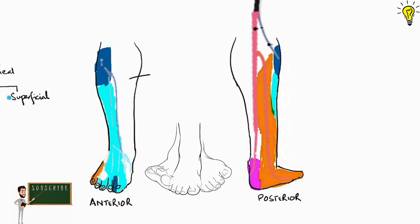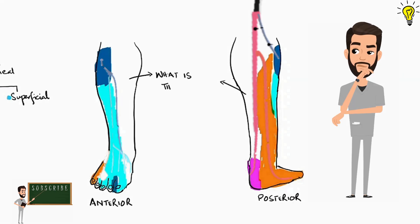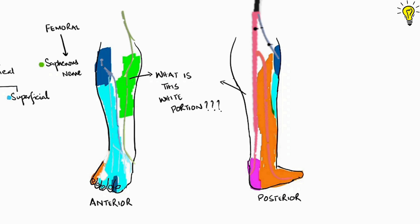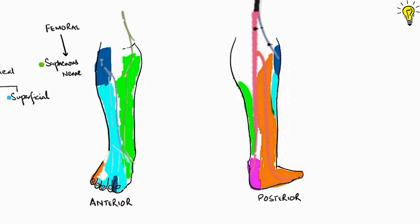What about this wide spared area — anteromedial on the leg, running all the way down to the foot? Yes — the saphenous nerve, coming down from the main femoral nerve, marked in green, covers the medial leg and foot. This nerve is not covered in popliteal sciatic nerve blocks, so it needs to be given a field block in the anteromedial position around the knee joint for complete anesthesia of the below-knee leg.